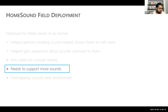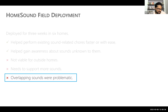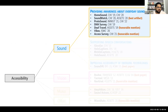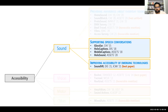Going back to the home field deployment, there's one more future work item: how to handle multiple overlapping sounds. Should we show only the top two or three sounds, or all sounds? Can we combine similar sounds — like a microwave beep and a dishwasher running — into a single sound to avoid overwhelming the user? Those were the two main threads. The third thread covers supporting speech conversation and improving the accessibility of sound in emerging technologies like AR, VR, and smartwatches.